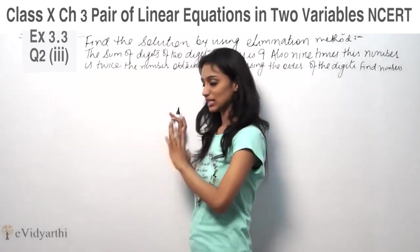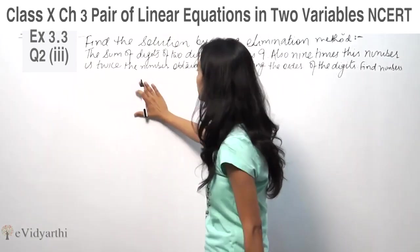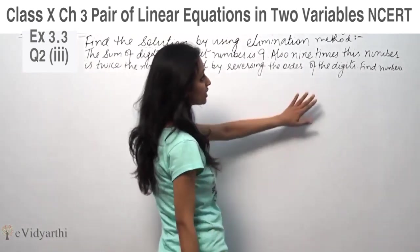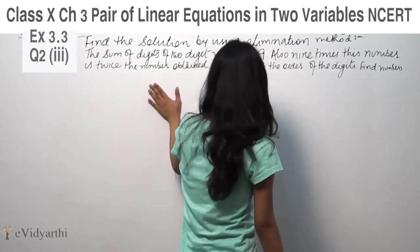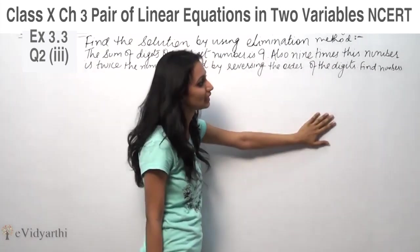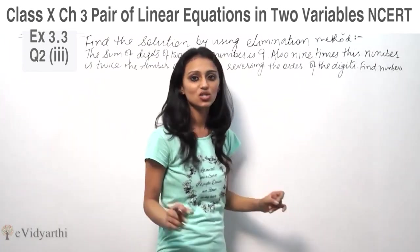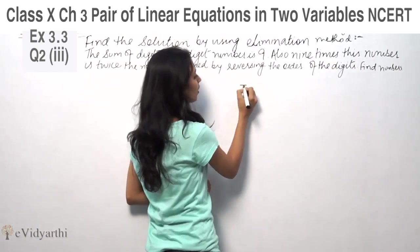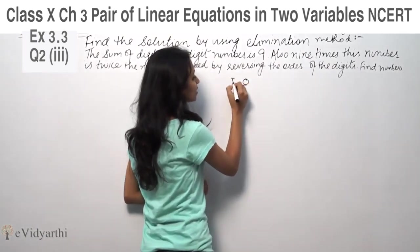The elimination method is used here. The sum of digits of a number is 9. Also, 9 times this number is twice the number obtained by reversing the order of the digits. Find the number. So first of all, we have a two digit number. Two digit number means one is units place and one is tens place.